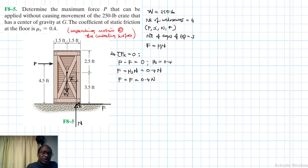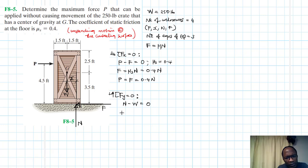So let's go to the summation of forces in the Y equal to 0. What do we have? We have N minus W equal to 0. And therefore, our N becomes equal to W, which is equal to 250 pounds.